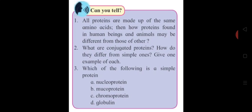Now some questions are shown on the screen. After discussion with your subject teacher, you have to solve these questions. Question 1: All proteins are made up of the same amino acids — then how can proteins found in human beings and animals differ from those of others? Question 2: What are conjugated proteins? How do they differ from simple ones? Give examples. Question 3: Which of the following is a simple protein — nucleoprotein, mucoprotein, chromoprotein, or globulin? Solve these and show your teachers; if you have any problem, contact your teacher.